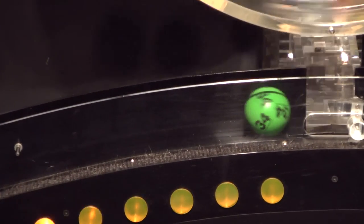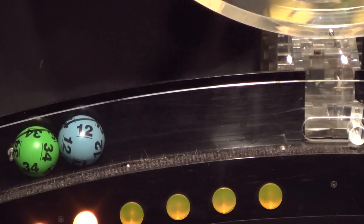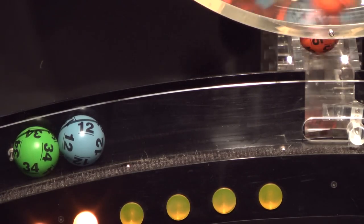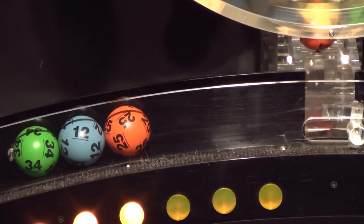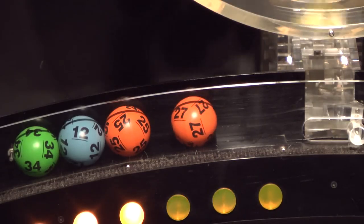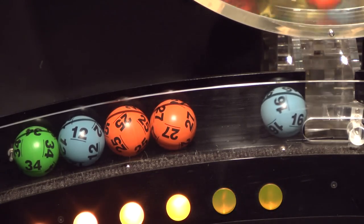Our first number up is number 34 and after that we have number 12. Rolling right behind that is number 25. Up next is 27 and the final ball in this sequence is number 16.